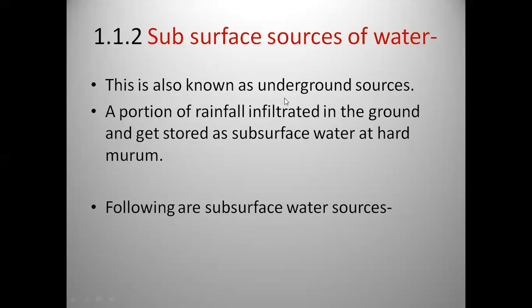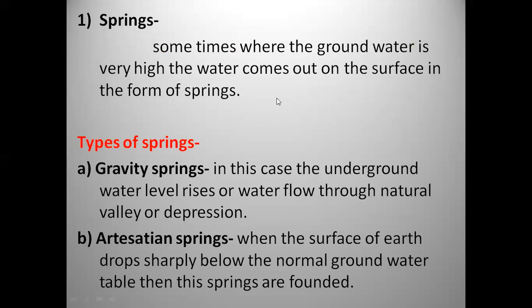Subsurface sources are also known as underground sources. A portion of rainfall infiltrates into the ground and gets stored as subsurface water — that is, underground water. The first subsurface source is springs. Sometimes, where the groundwater table is very high, water comes out on the surface in the form of springs. There are two types of springs: gravity springs and artesian springs.